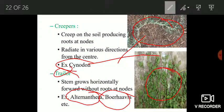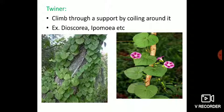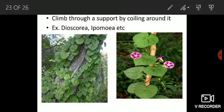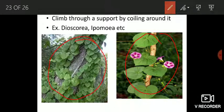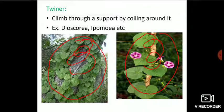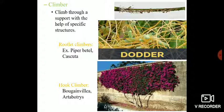One more type of weak stem is the twiner. Those plants which climb through a support by coiling around it are known as twiners. Examples are Dioscorea and Ipomoea. You can see both these plants have climbed their supports by twining around them.